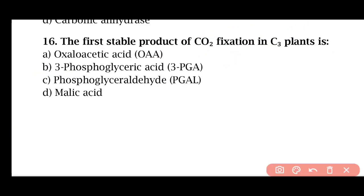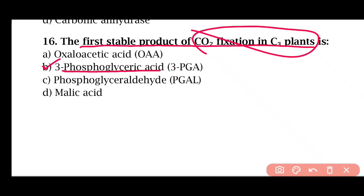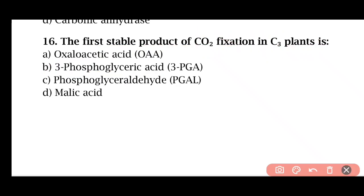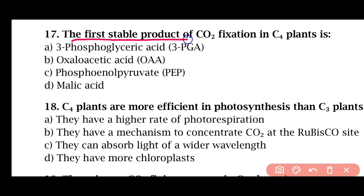Question 16: The first stable product of carbon dioxide fixation in C3 plants is — oxaloacetate acid, 3-phosphoglyceric acid, phosphoglyceraldehyde, or malic acid. Correct answer is option B: 3-phosphoglyceric acid. Question 17: The first stable product of CO2 fixation in C4 plants is — oxaloacetate acid, 3-PGA, phosphoenol pyruvate, or malic acid. The correct answer is option B: oxaloacetate acid.